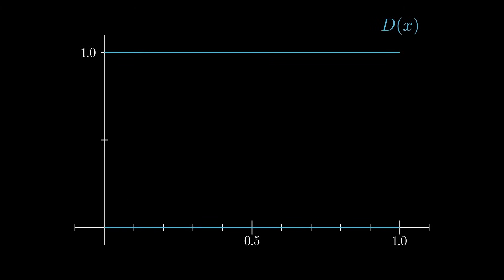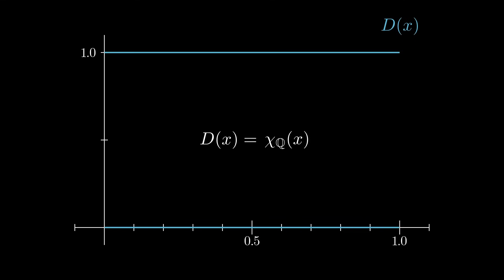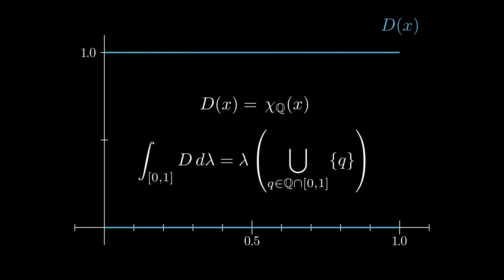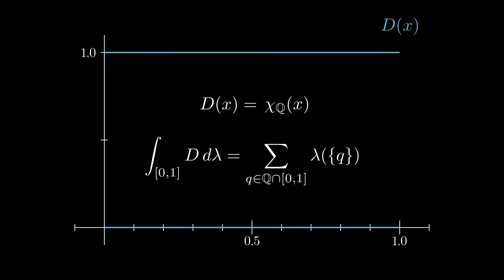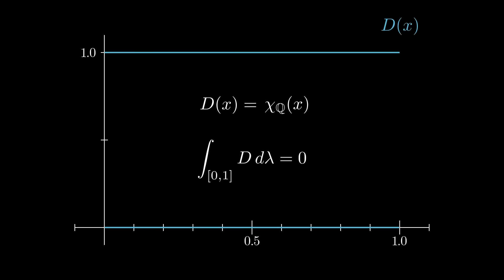We can now look at the Dirichlet function and understand what its integral should be. The Dirichlet function is equal to 1 on the rationals and equal to 0 on the irrationals — clearly, this is the same as the characteristic function of the rational numbers. So its integral over the interval from 0 to 1 is the Lebesgue measure of the rational numbers between 0 and 1. We may rewrite this as the disjoint union of single element sets. As the rational numbers are countable, we turn the union into a summation. The Lebesgue measure of a single element is equal to 0, so we get that the Lebesgue integral of the Dirichlet function is equal to 0.